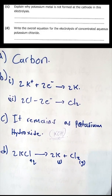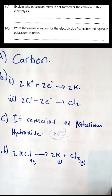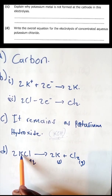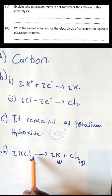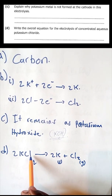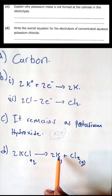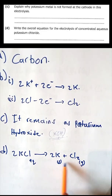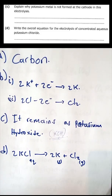Question d: write the overall equation for the electrolysis of concentrated aqueous potassium chloride. You have potassium chloride, and you split it into two products — potassium and chlorine — and your overall reaction will be that equation.